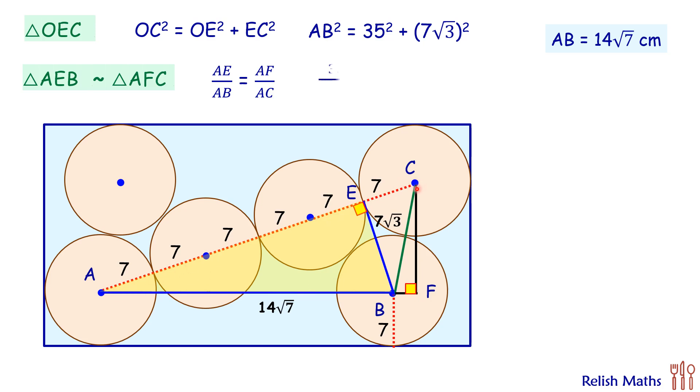Putting these values, we have 35 upon 14√7 equals AF upon 42. Solving it, we'll get the value of AF as 15√7.